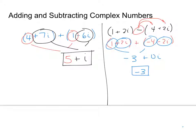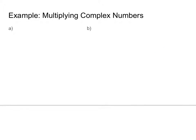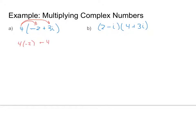We can also multiply complex numbers. All the usual rules still apply — I can use the distributive property, FOIL, or any of these operations. The imaginary unit i functions like a variable. So for example, distributing 4 into the quantity negative 2 plus 3i gives 4 times negative 2 plus 4 times 3i, which simplifies to negative 8 plus 12i.